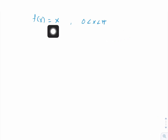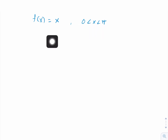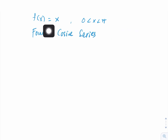We know that f(x) equals x is an odd function, but in this case we cannot say that it is an odd function yet, because our interval given here is only half — from 0 to L. Since we want to find the Fourier cosine series, we want to expand f(x) in a Fourier cosine series, so we have to make our function f(x) an even function.